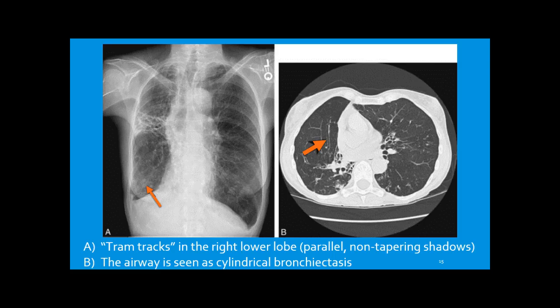On chest X-ray, you can see tram tracking in the right lower base, and on CT you see cylindrical bronchiectasis. When you see these findings, you should think about the differential that could be causing this end result.